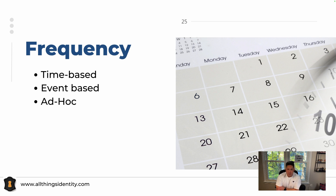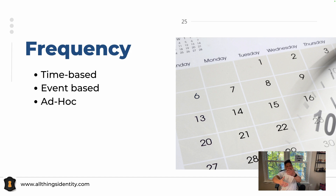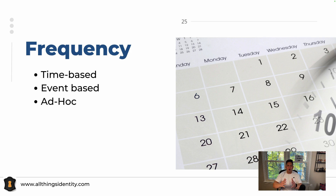Ad hoc is just whenever you want to do it. It's kind of similar to when you get a breach because you're doing ad hoc, but it's really just whenever. And it kind of goes the same line with the event-based. So those are two common things in terms of where it could happen. But typically, time-based is your more often used frequency when it comes to certifications.